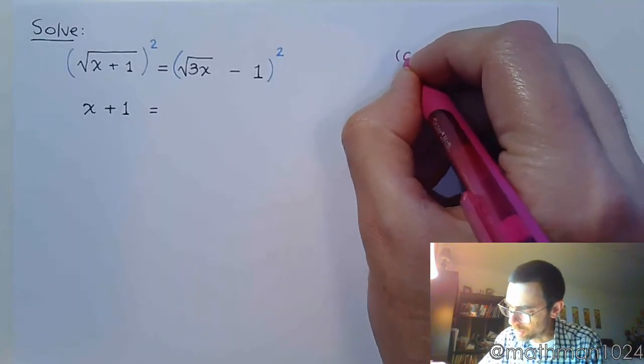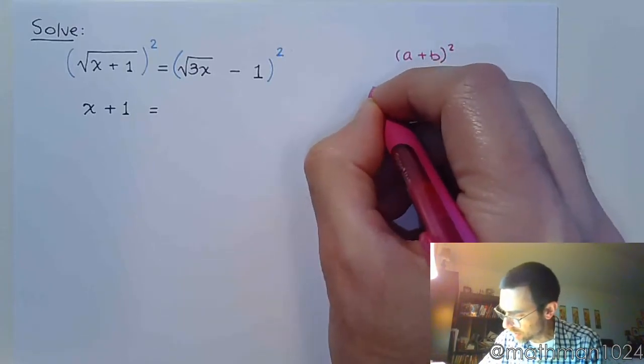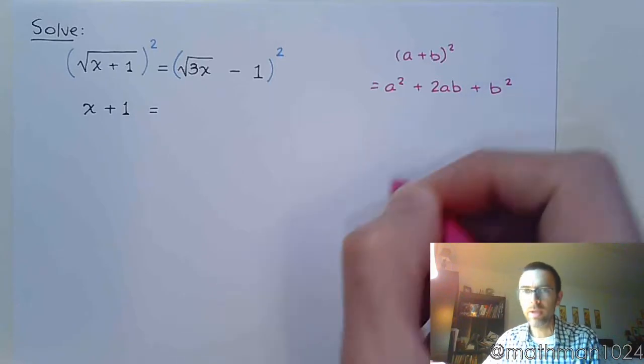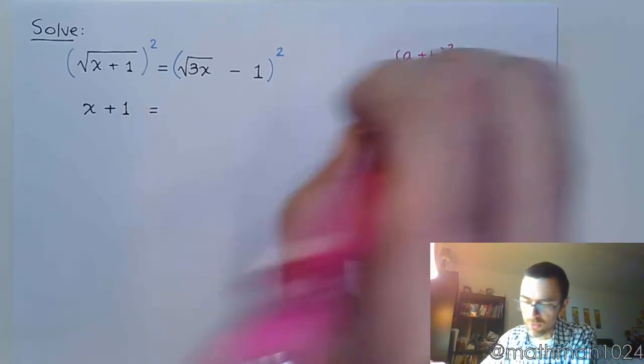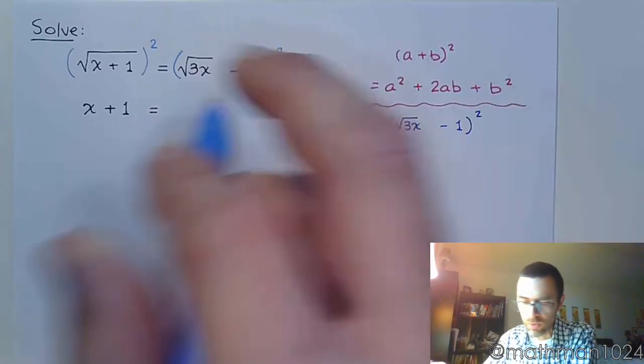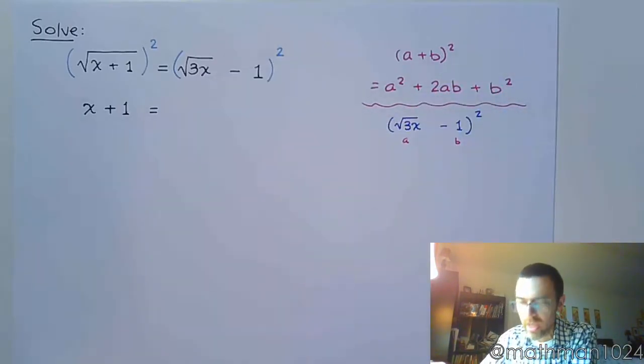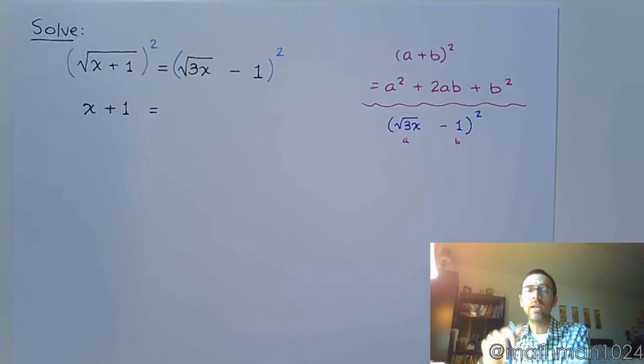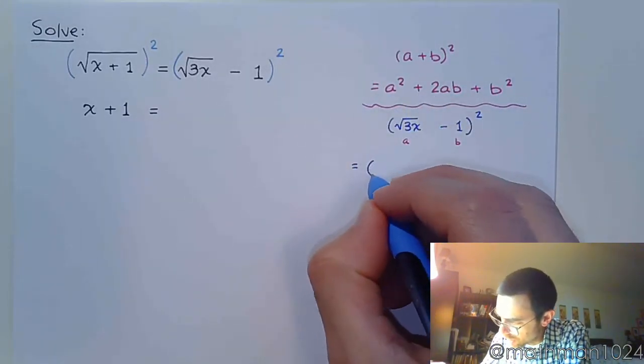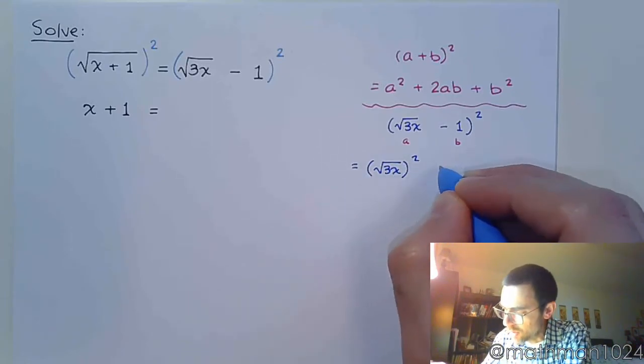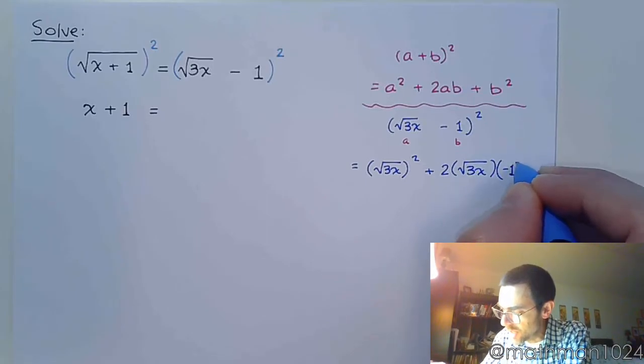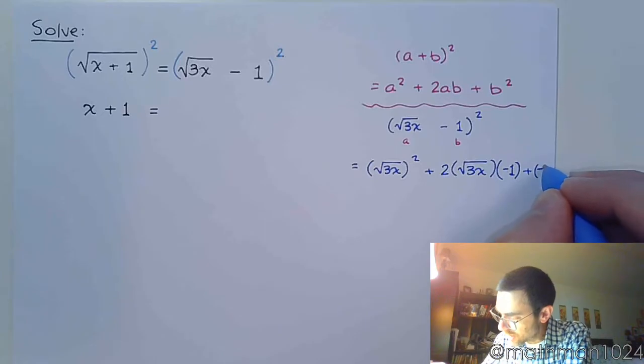On the right side we can again think about that formula when you square a binomial you get a squared plus 2ab plus b squared. So you think about how does it work for this particular example. Well, you've got the square root of 3x minus 1 squared, so this is acting as your a and that's your b. Now again, you could try to foil this out by writing the square root of 3x minus 1 times the square root of 3x minus 1, but if I follow this pattern up here, that means that I would take a which is this guy squared plus 2 times a which is the square root of 3x times b which is negative 1 plus you're going to take negative 1 squared.